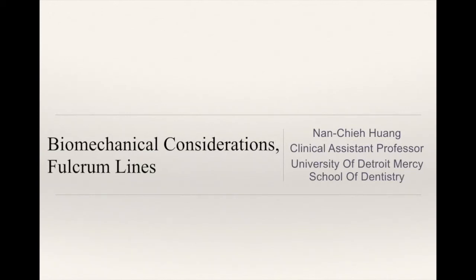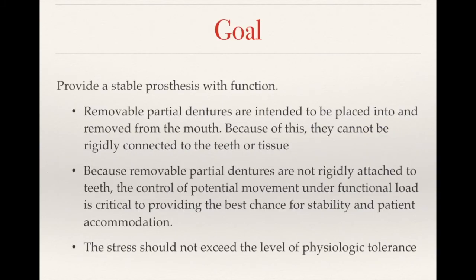Today we will discuss the biomechanical considerations in removable partial dentures. Our goal is to provide a stable prosthesis with function. When we design removable partial dentures, they are intended to be placed into and removed from the tooth. Because of this characteristic, they cannot be rigidly connected to the tooth or the tissue, and they will have some potential movement. Those potential movements under functional load are critical to providing the best chance for stability and patient accommodation.